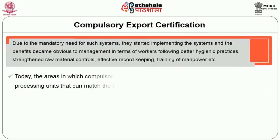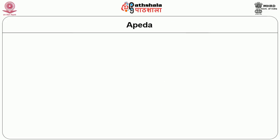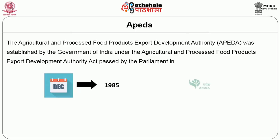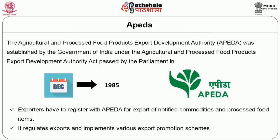Wherever the compulsory export certification has been introduced, the quality aspect is now matching the best in the world. Coming to APEDA — Agricultural Processed Food Products Export Development Authority — it was established by the Government of India in the year 1985 by passing the APEDA Act. Exporters have to register with APEDA for export of notified commodities and processed food items. It regulates exports and implements various export promotion schemes of the Government of India.